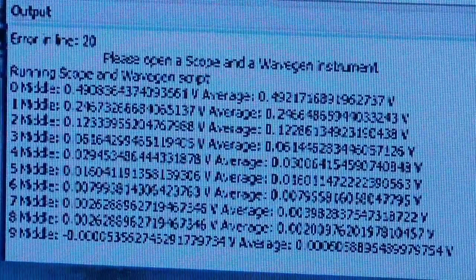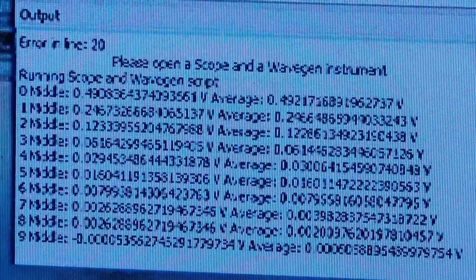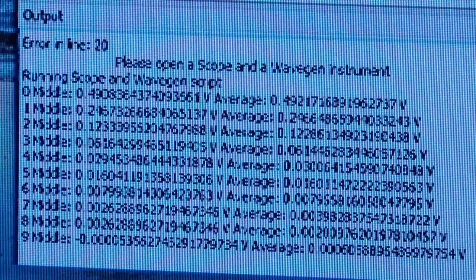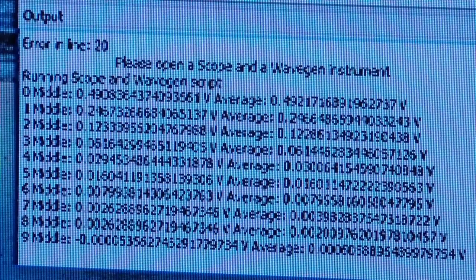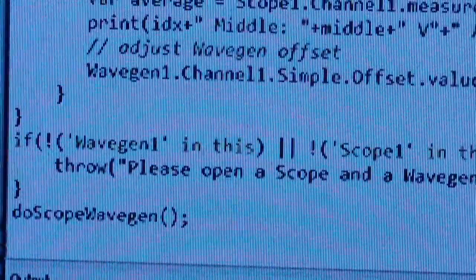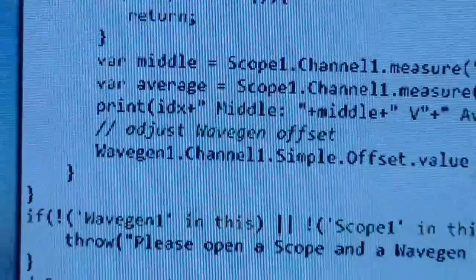What you see this script doing is computing an average of a series of acquisitions. It's changing the value of the wave generator, acquiring a signal from the scope, and then averaging that with all of the previous signals. It does that 10 times, so it winds up with an average.